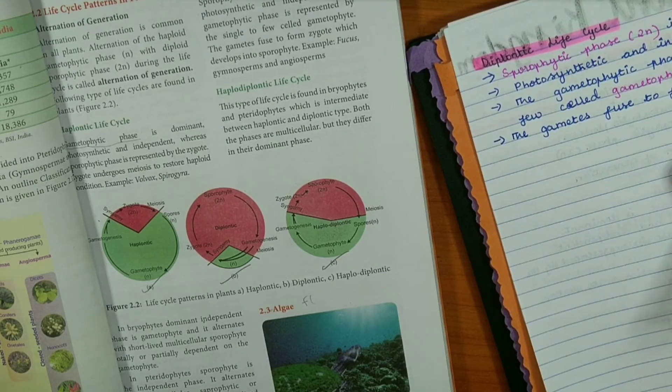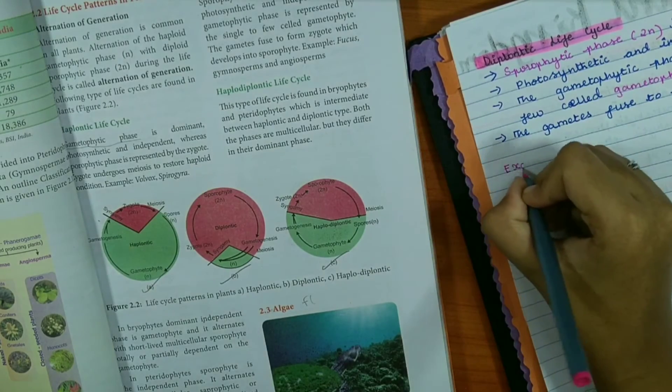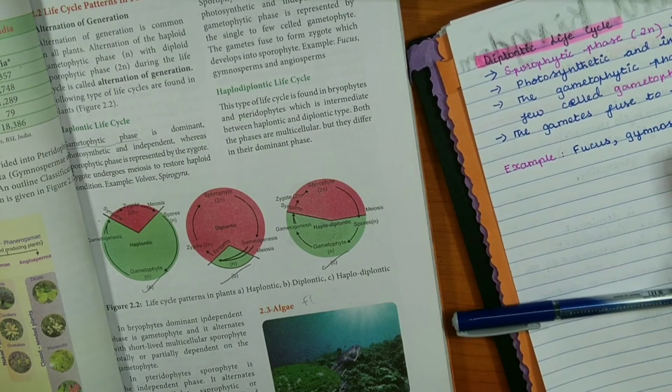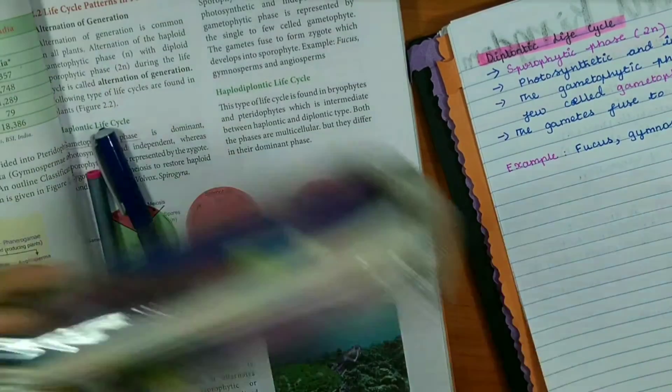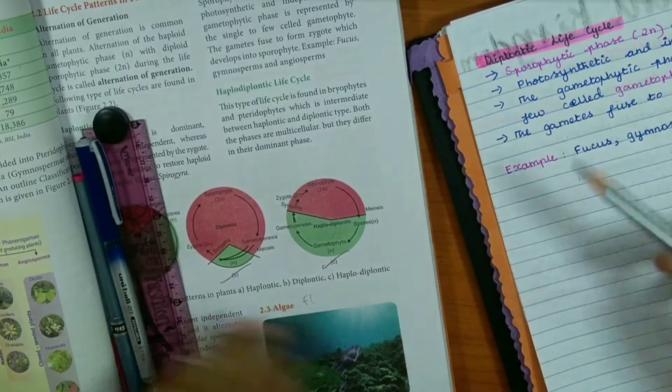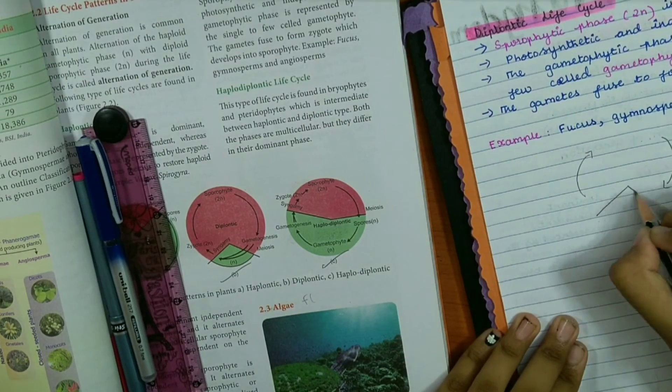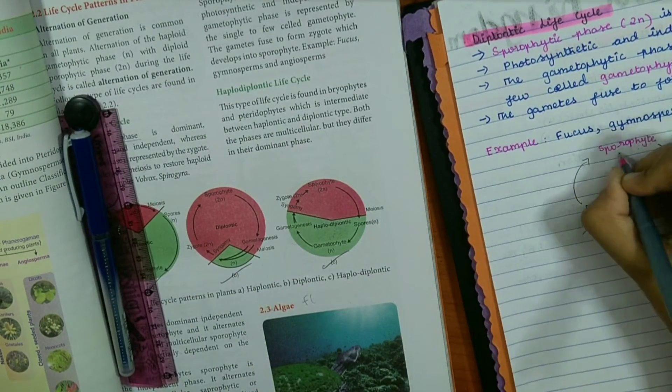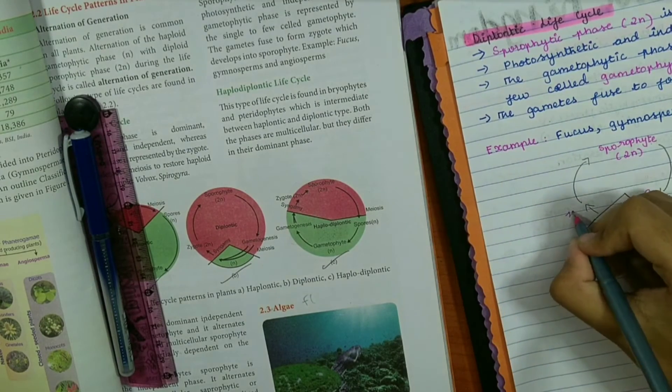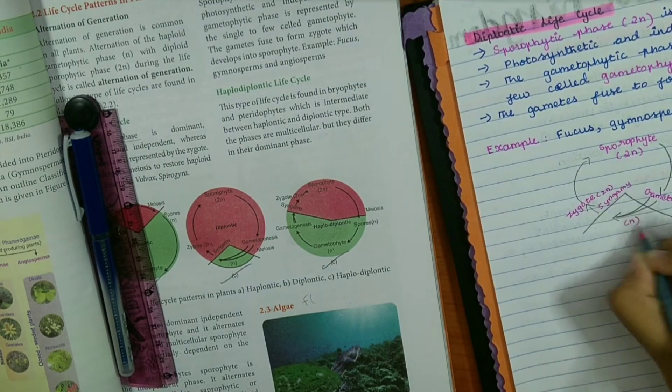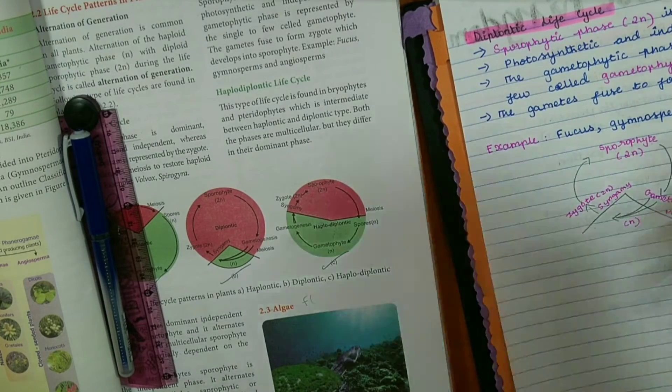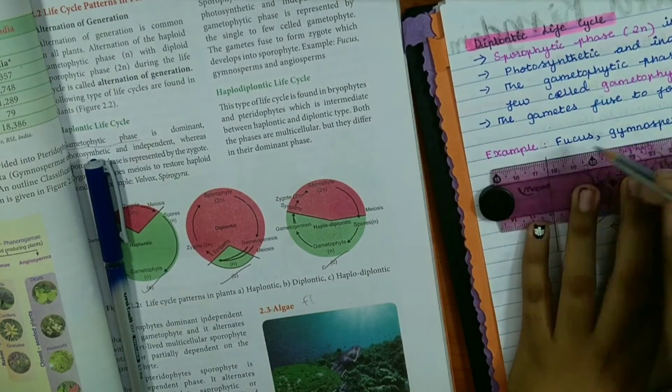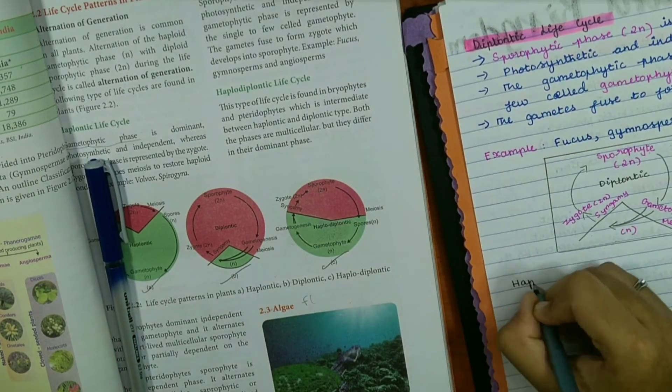It's really important to mark the importance so that when you don't get time to learn the whole chapter, you can just go through the important topics. Just by going through the important topics, you can actually get an idea of the simpler terms which would make it easier to learn. While I study, I would first start studying the very important topics that I've marked, then I would go to the simpler two or three mark definitions. After finishing the definitions, I would go for the diagrams.